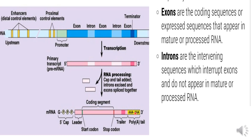The tailing function helps with translation — assisting in polypeptide synthesis. It also aids in the stability of mRNA, protecting it from degradation.